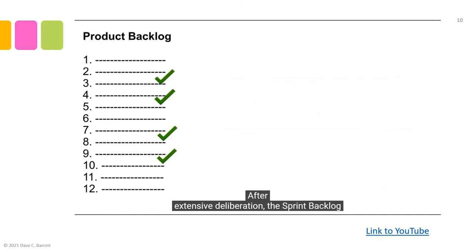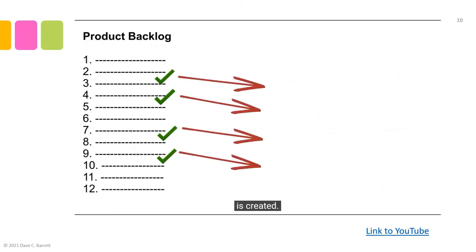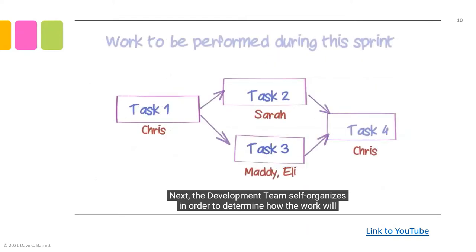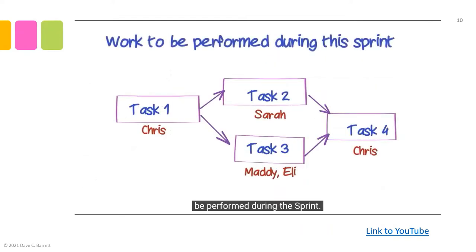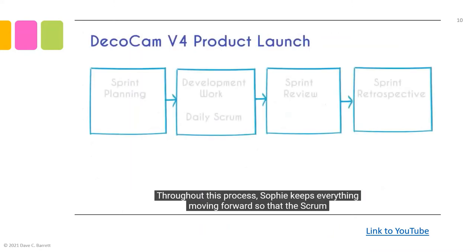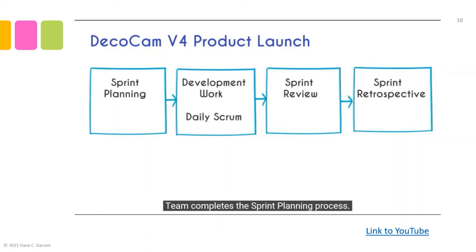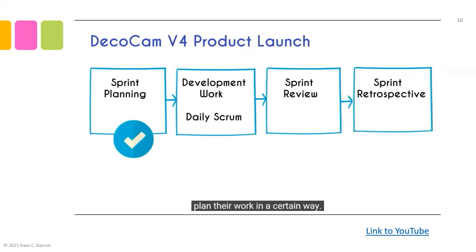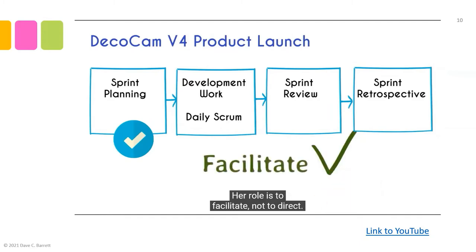After extensive deliberation, the sprint backlog is created. The development team self-organizes to determine how the work will be performed during the sprint. Throughout this process, Sophie keeps everything moving forward so the scrum team completes sprint planning. She is careful not to direct the development team to include certain user stories or to plan their work in a certain way — her role is to facilitate, not to direct.